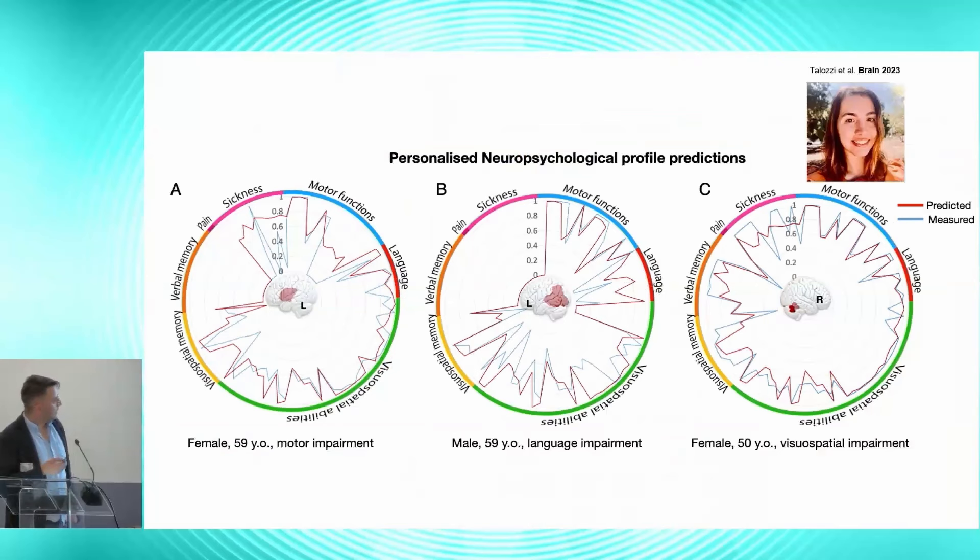Here you have like exemplified like three patients where you can do individual prediction. And you can see here, for example, this patient that have a deficit motor function. You have the comparison between the observed behavior in blue and the predicted behavior in red. You can see that the disconnectome symptom discoverer predicted a deficit, although it's a little bit more optimistic than the neuropsychologists that might have given up on asking the patient to move after a while.